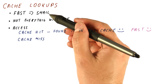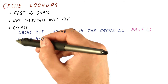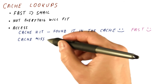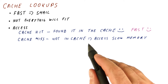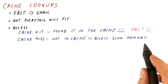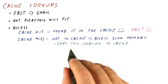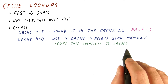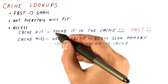But because the cache is very small and not everything fits in it, we can also have a cache miss. This happens when what we're looking for is not in the cache, and in that case we have to access the slow memory. When we have a cache miss, we want to copy that location to the cache so that next time we access it — and hopefully we will, because of locality — we will have a cache hit.